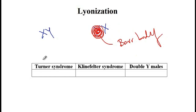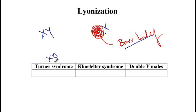This question is asking which of the following chromosomal disorders will form Barr bodies. First, we need to know the genotype of each disorder. Turner syndrome is XO — there is only one X chromosome. Klinefelter syndrome is XXY.